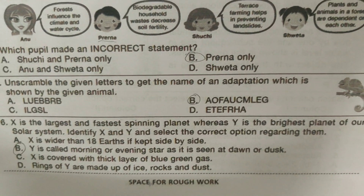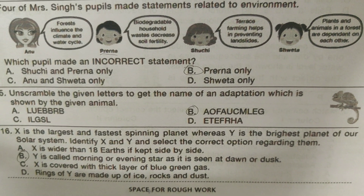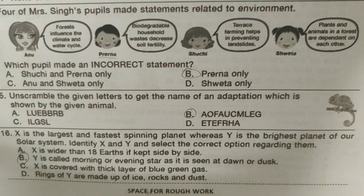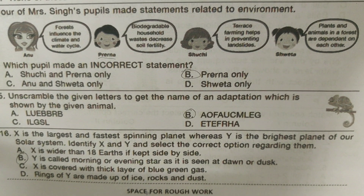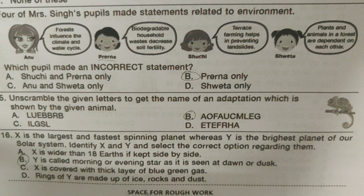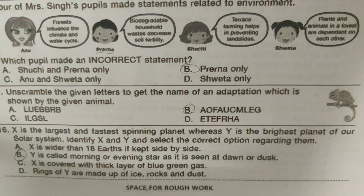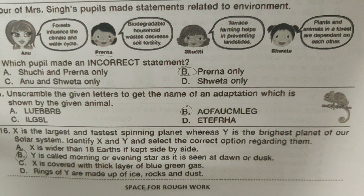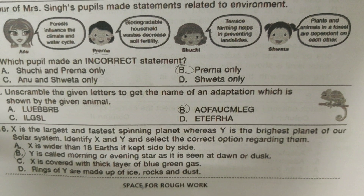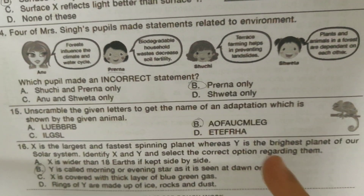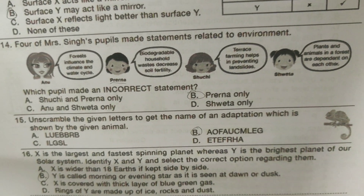X is the largest and fastest spinning planet, whereas Y is the brightest planet of our solar system. Identify X and Y and select the correct option regarding them. Y is called morning or evening star as it is seen at dawn or dusk — Y might be Venus, and I think so.